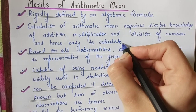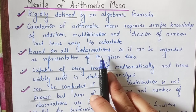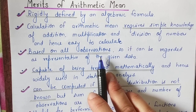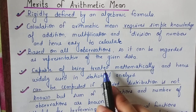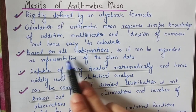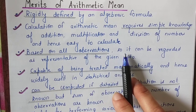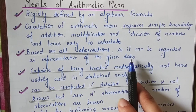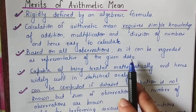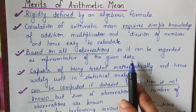The third merit is that it is based on all the observations. In arithmetic mean, you have not left any item, any number, any observation — you have not skipped anyone. So it can be regarded as representative of the given data. It is representative of the entire group.